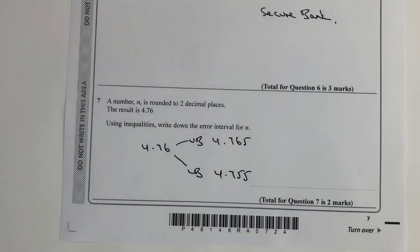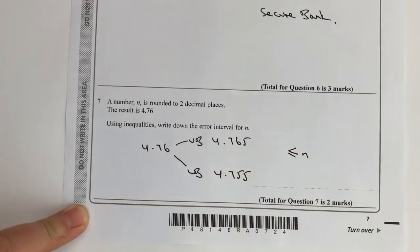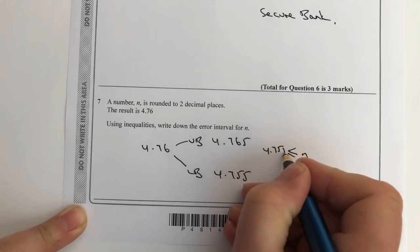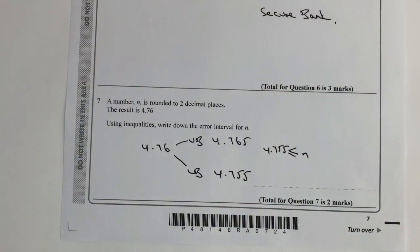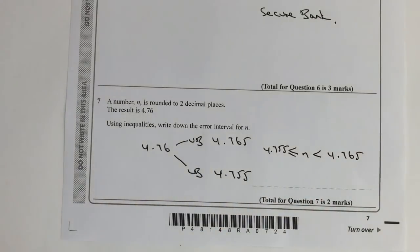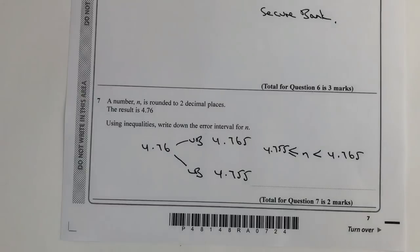If we're going to write this down as what they call an error interval, what we're basically saying is that the number is greater than or equal to the lower bound 4.755 - and that's absolutely fine because we can round that up to 4.76 - however the number n is less than 4.765. So in other words it doesn't equal 4.765; that's simply the limit of that particular tolerance.